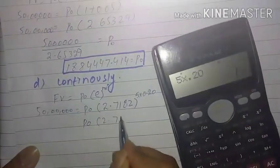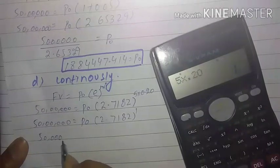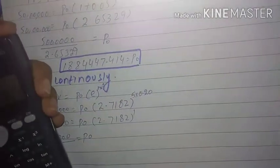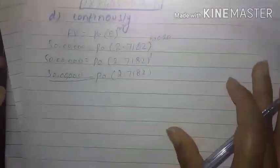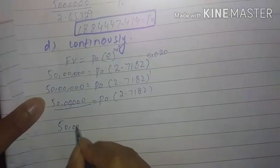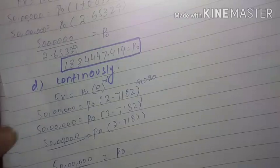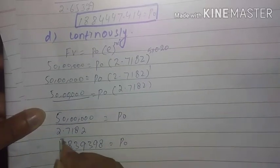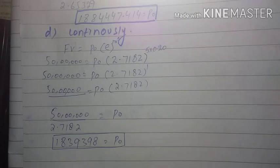So P-naught times 2.7182 raised to power 1 equals 50 lakh. We divide 50 lakh by 2.7182, taking the factor e raised to 1 = 2.7182. This gives us P-naught equal to approximately 1,839,398. This is the initial deposit if compounded continuously. So we had four options: annually, semi-annually, quarterly, and continuously — and we have calculated the maximum bid for each case.